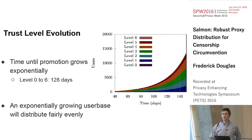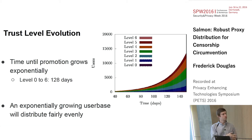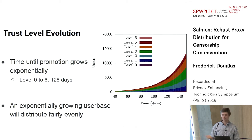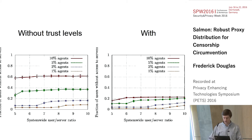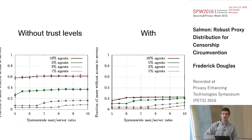These trust levels use exponential wait times for promotion: it takes two days to get to the first level, then four days, et cetera, so getting from entry level all the way to the top takes 128 days. Aside from providing a long wait time, the specific exponential distribution means that even if your user base was growing exponentially, you still get a nice even spread among trust levels, which is important — if everyone were the same trust level, it would be as if you just didn't have trust levels. Disabling trust levels results in roughly double or triple the number of innocent users getting banned from the system.